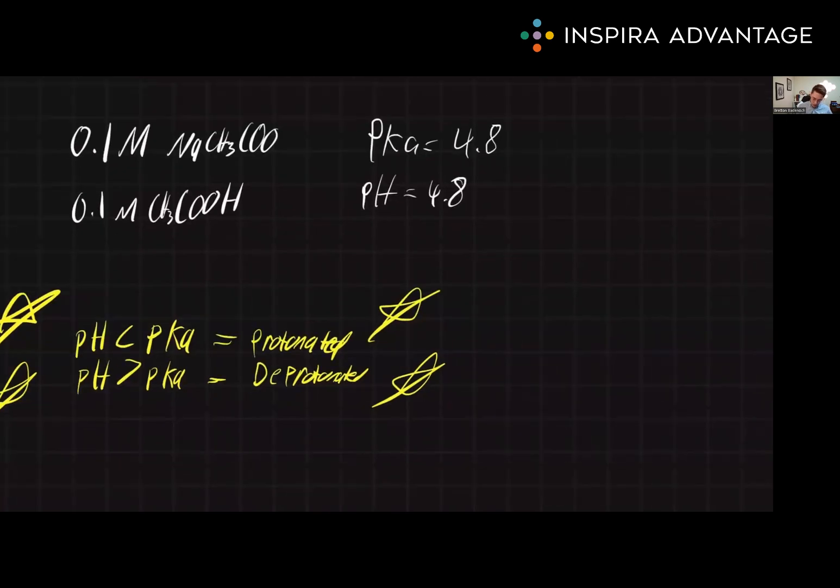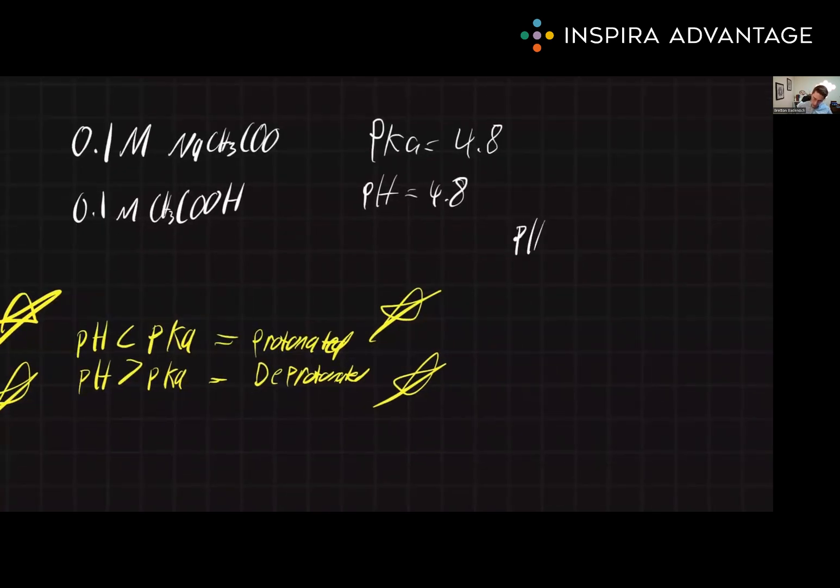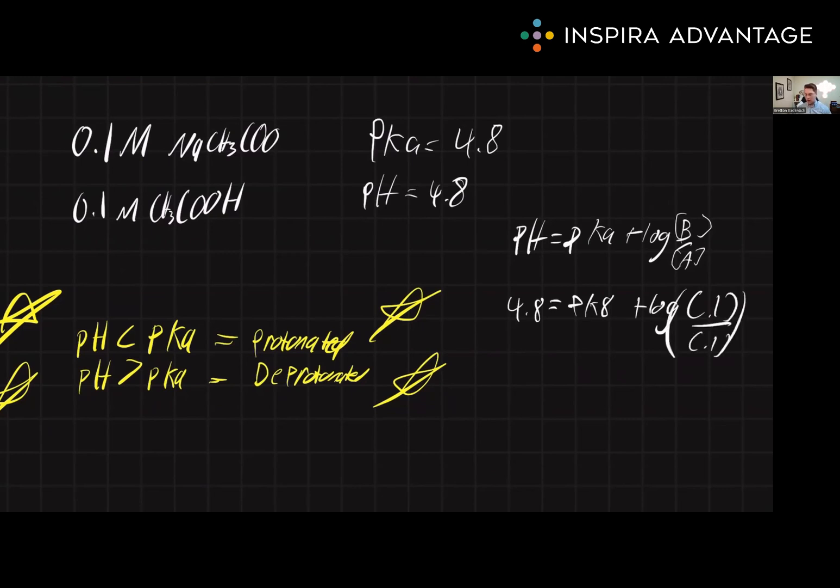All right, now I'll walk you through it. So again, we want to write down what we're doing. pH equals pKa plus the log of base over acid concentration. So we have the pH as 4.8. We know the pKa is 4.8. And we know that the logs are the same. So I'm just going to say 0.1 over 0.1. So let's handle the log first.